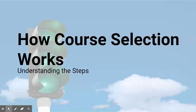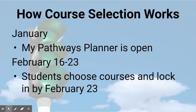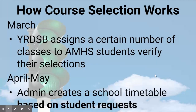Now let's look at a few important things before we go into course selection: how course selection works, and why the dates are very important. My Pathways Planner, found on the YRDSB website, opens in January, but you cannot begin choosing courses — you can begin browsing. On February 16th, My Pathways Planner opens, and it closes and locks on February 23rd. It's very important to follow these dates, as we at AMHS can determine, along with the board and your region district school board, the courses that we can offer. If we have enough students picking a certain course, we can offer those courses to you.